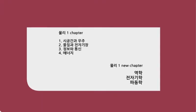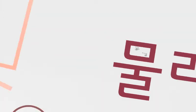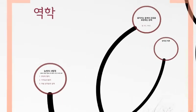현재 물리원 챕터를 보면 위와 같은데요. 책의 내용을 보면 물리학의 다양한 분야들을 조금씩 포괄적으로 배우고 있습니다. 이를 재구성해보니 역학, 전자기학, 파동학으로 새로운 챕터를 나눌 수 있습니다. 가장 먼저 역학을 볼까요?